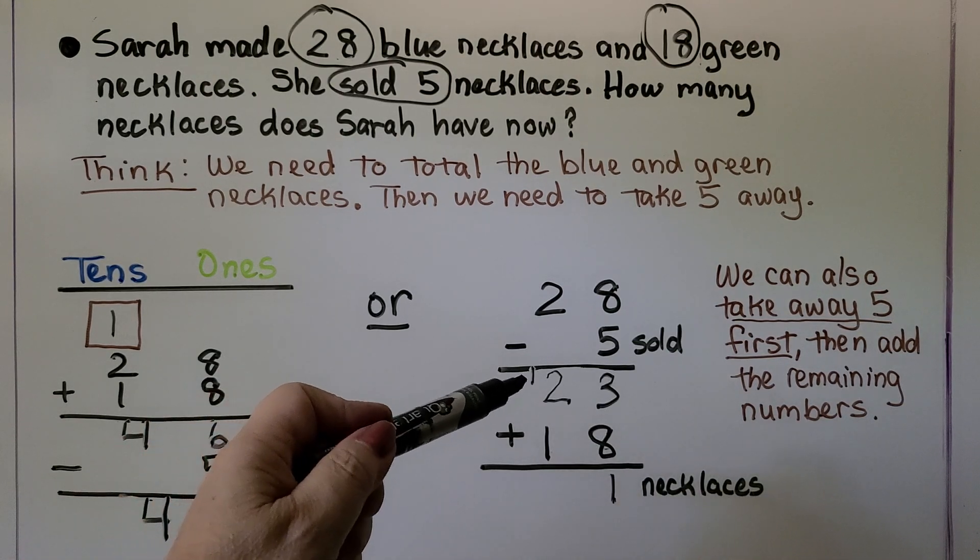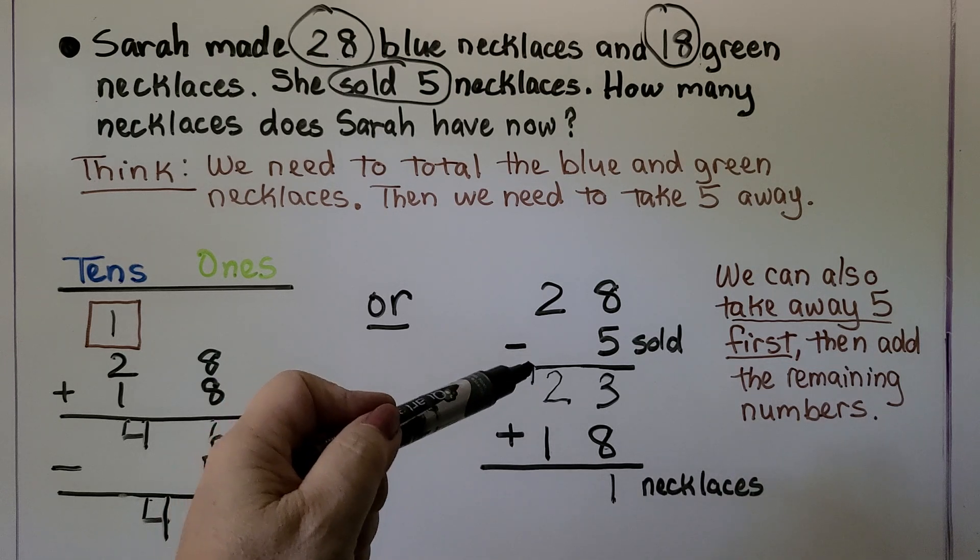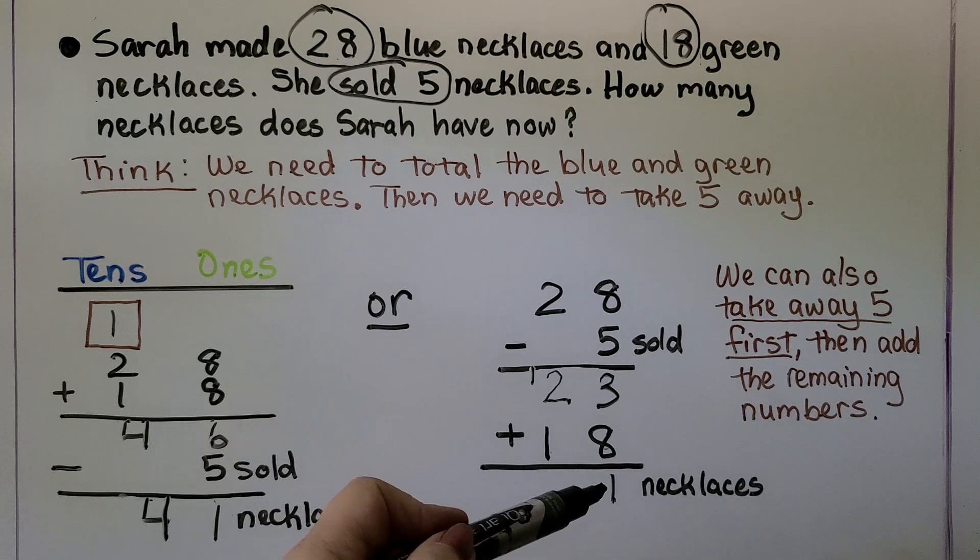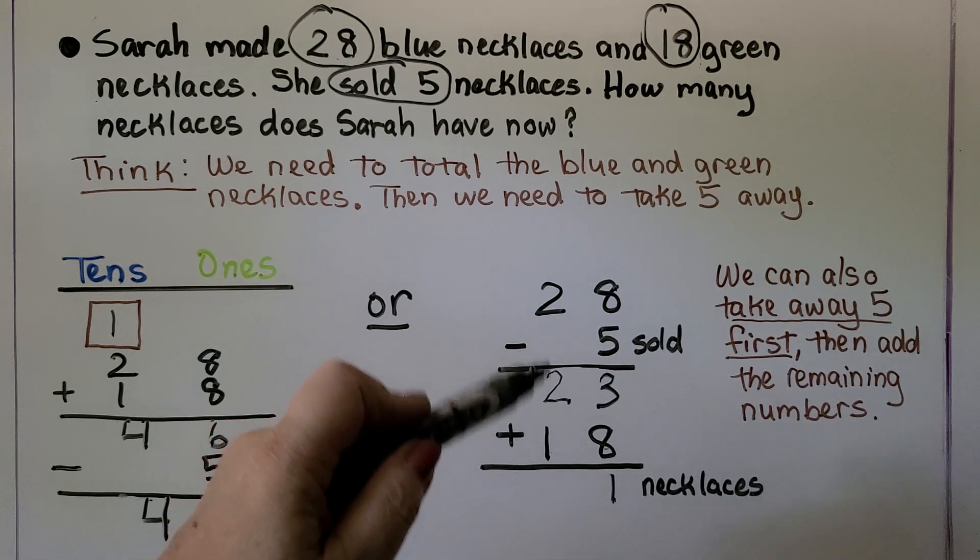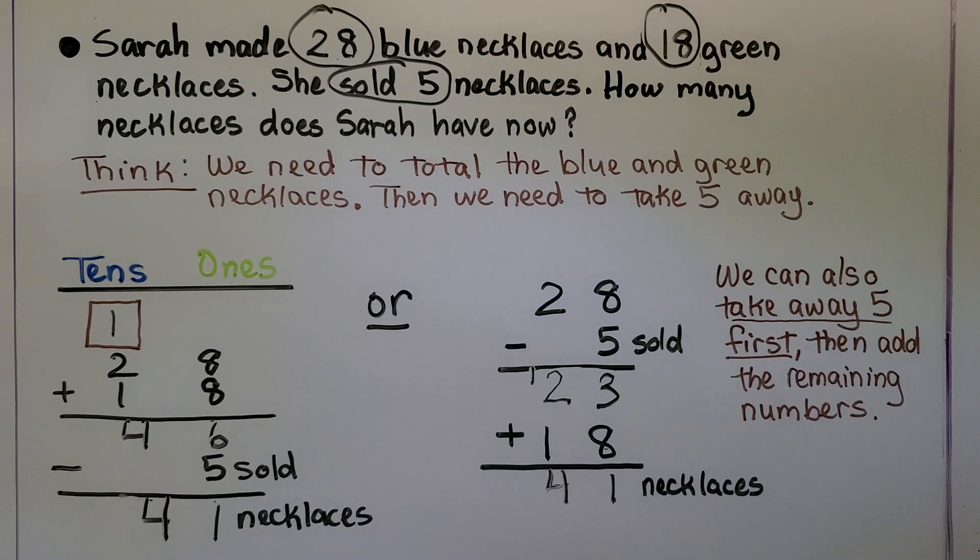We regroup the 1 10 and 1 1 like this. We put the 1 10 in the tens column and the 1 in the ones column. Now we add the tens. We've got 2, 3, 4. And we get 41 necklaces just like we did here. So there's usually more than one way to solve a problem.